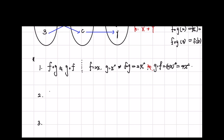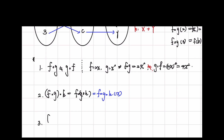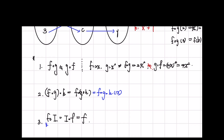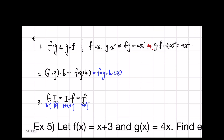The second property is f of (g composed with h) is equal to f of g of h, both of which can be written as f of g of h of x. The third property is f composed with i is equal to i composed with f, which is equal to f, where i is an identity function. So f composed with i and i composed with f are both equal to f. Now we know the properties of composite functions, so let's do some practice together.